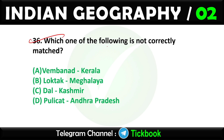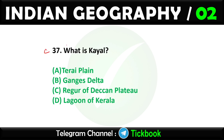Question thirty-six: Which one of the following is not correctly matched? Option number B: Loktak is not located in Meghalaya; it is located in Manipur. Question thirty-seven: What is Kyal? Option number D is the right answer: Lagoon of Kerala.